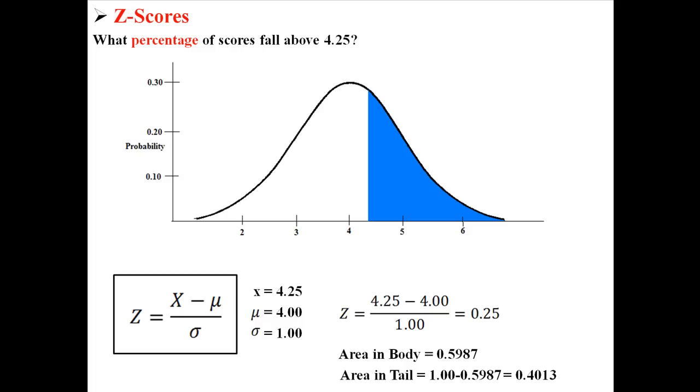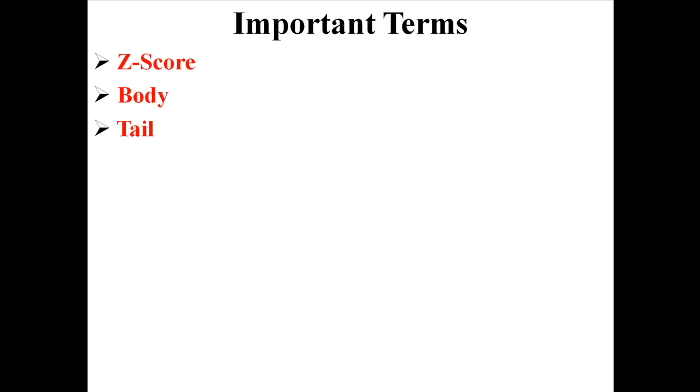And that's how we take a score, convert it into a z-score, and then use a z-table to find a percentage. So in this lecture, I talked about z-scores and the difference between the body and the tail.